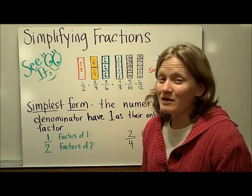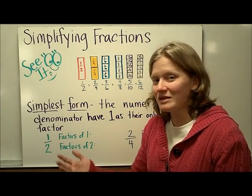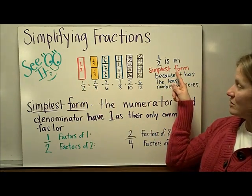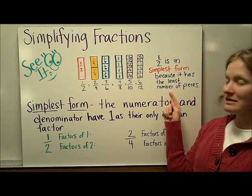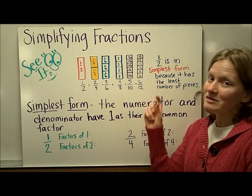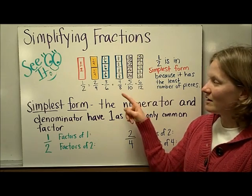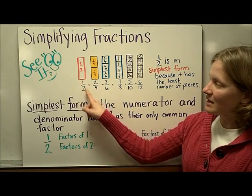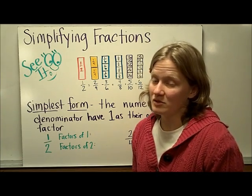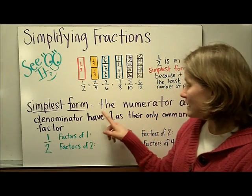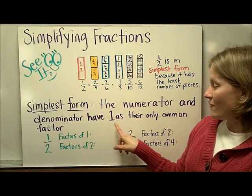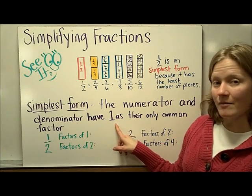If we're talking about simplest form, it's easy to see that the 1 half fraction is in simplest form because it has the least number of pieces. Something that's simple is going to have a small amount of pieces. So in this case, the 1 half is in simplest form. The reason it's in simplest form in mathematical terms is because the numerator and the denominator have 1 as their only common factor.